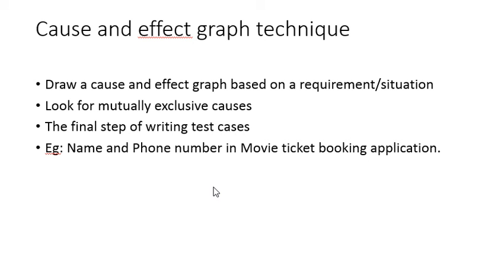For example, if you are testing a movie ticket booking application, you just imagine there are two fields. One is name, the other one is phone number. So in the name field, the application will expect you to enter the characters. And in the phone number, the application will expect you to enter the digits.